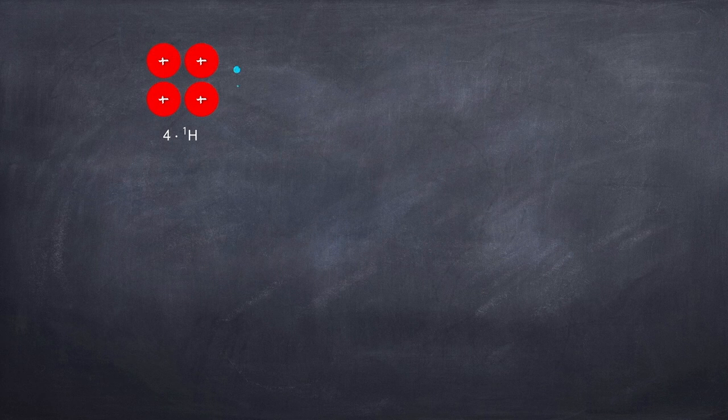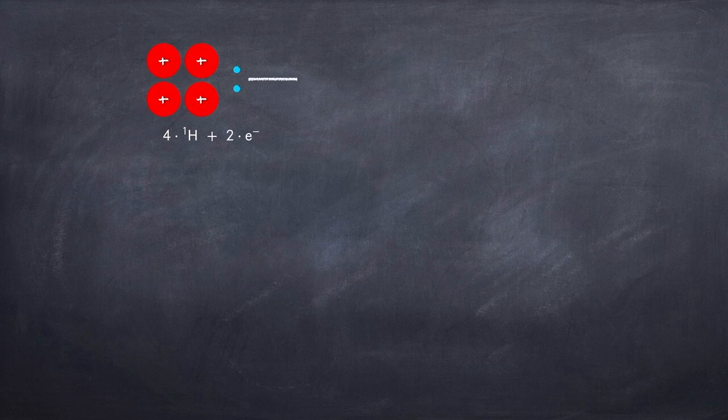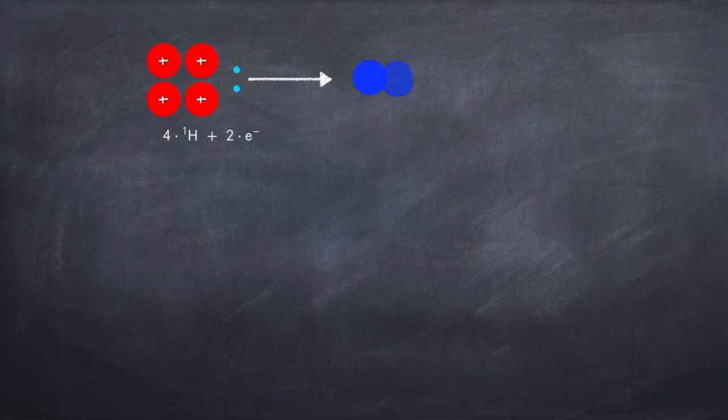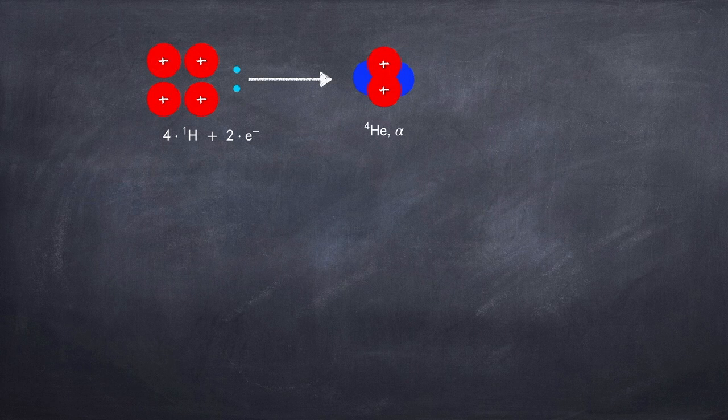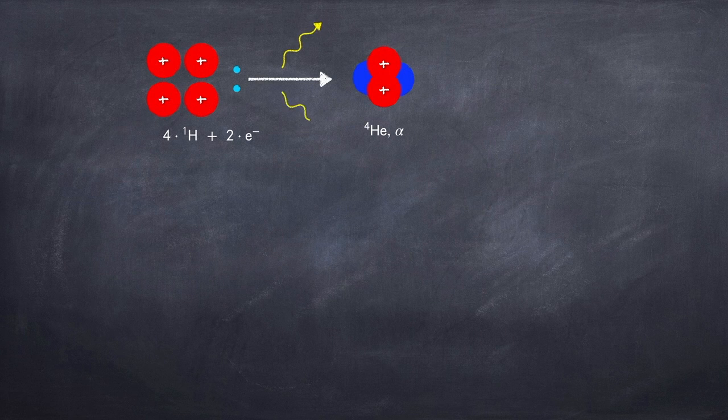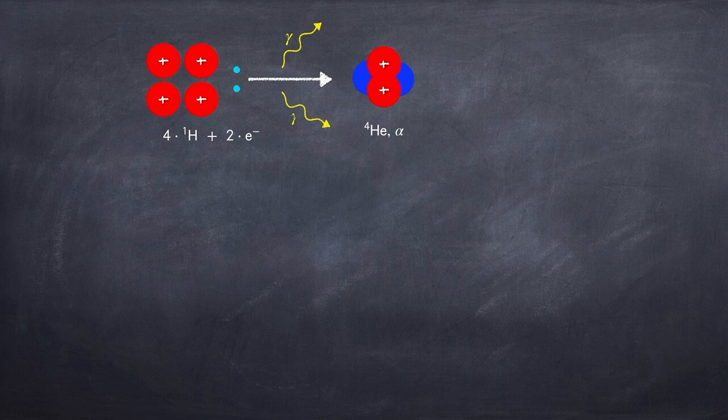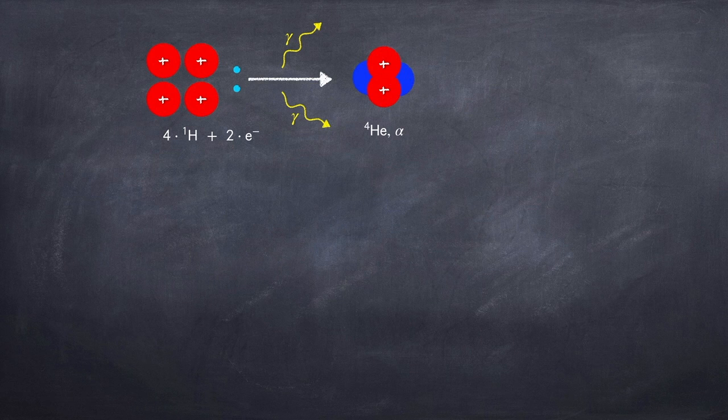Recall from Stellar Physics 1a that stars are powered by hydrogen fusion in their cores. This is when four hydrogen nuclei or protons and two electrons are converted into a helium nucleus, otherwise called an alpha particle. In this process energy is released in the form of photons, otherwise called gamma rays, as well as neutrinos.